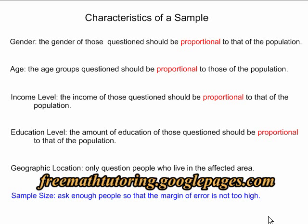In my statistics course, I can be given a situation where there's going to be a sample survey and I can be asked, what are the characteristics I want in my sample? In the example I'm going to use, there is an all-girls school located on an island in the city. The girls are going to be asked would they like to come to school by train. So far, most of the girls who travel to school come by bus. This is the purpose of the survey. So let's look at the characteristics we want in our sample.